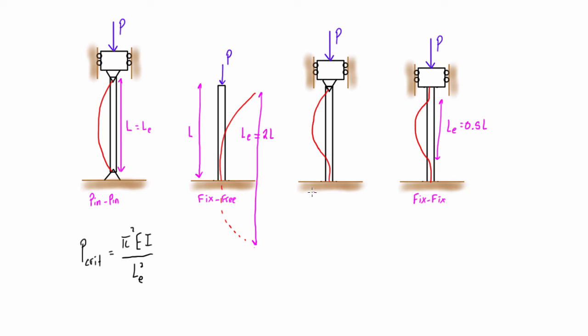And in the case where we have a fixed end in conjunction with a pin end, then the effective length is going to be LE equal to 0.7L. So really the only modification that you have to add into this expression is just making sure that you're using LE rather than just the length, and it's pretty simple, you just apply the factor whether it's 1, 2, 0.7, or 0.5, and then easily from there you can calculate the critical load for your column.